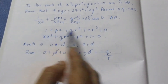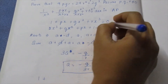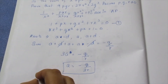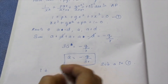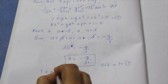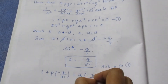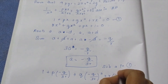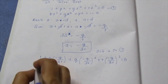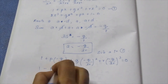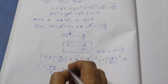Since a is a root, substitute x = a = -q/3r into the equation. So substituting into equation 1: 1 + p(-q/3r) + q(-q/3r)² + r(-q/3r)³ = 0.